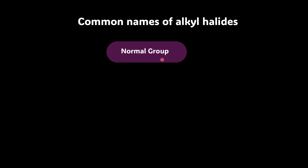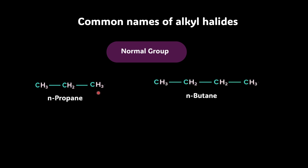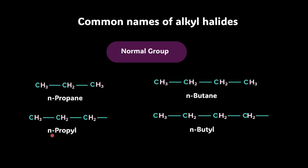Let's get started with the common names of alkyl halides, starting with the normal group. You remember hydrocarbons? When you have a straight alkane chain, that's when you have an N-alkane. So this small 'n' prefix stands for the normal group. We call it N-propane, so if I have 4 carbons, we call it N-butane. But if we remove one hydrogen, it becomes an N-alkyl group. So 3 carbons, I can call it N-propyl.